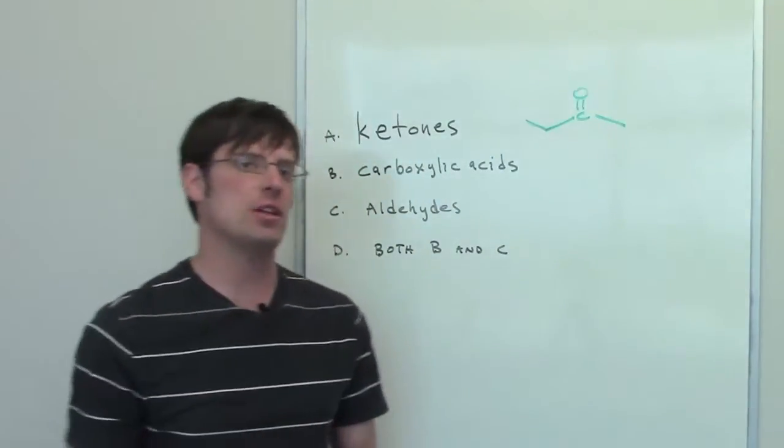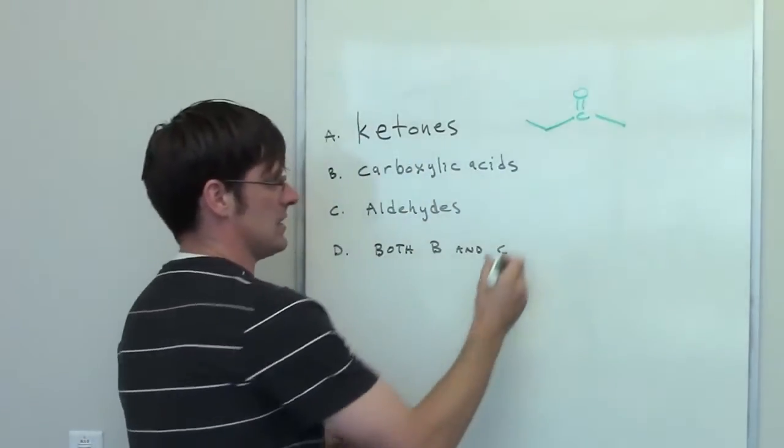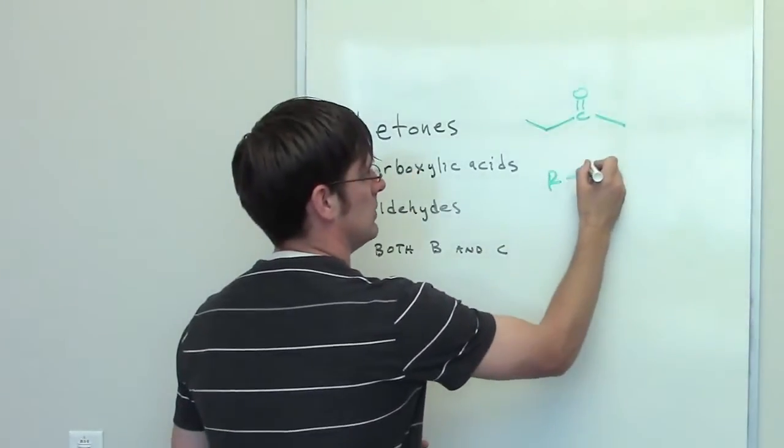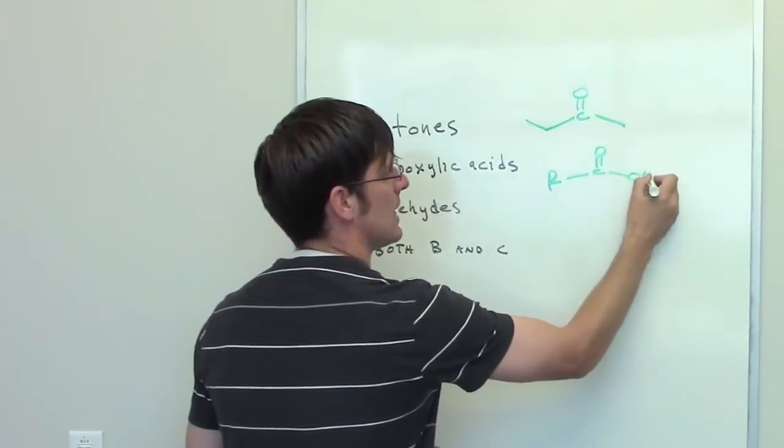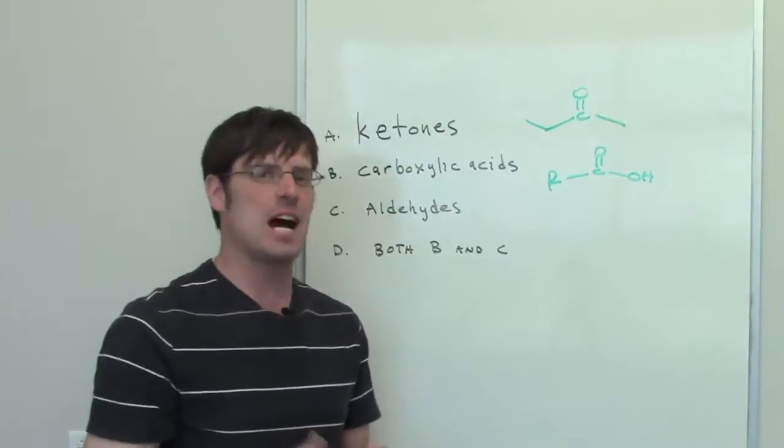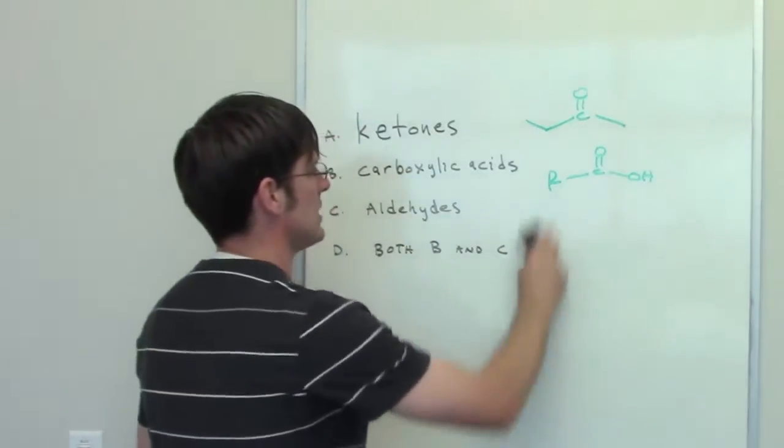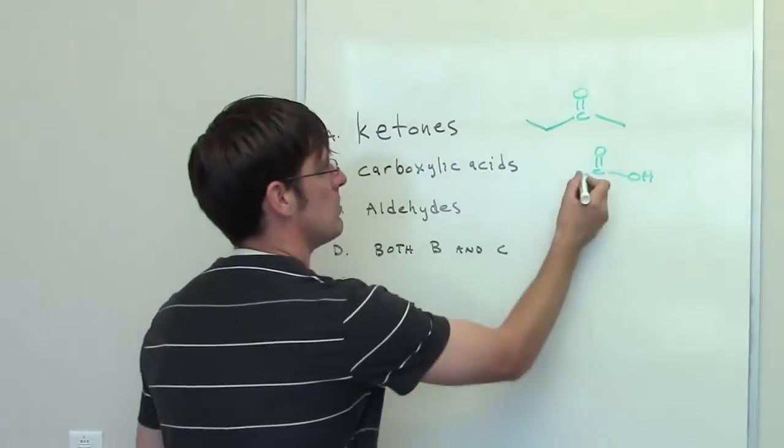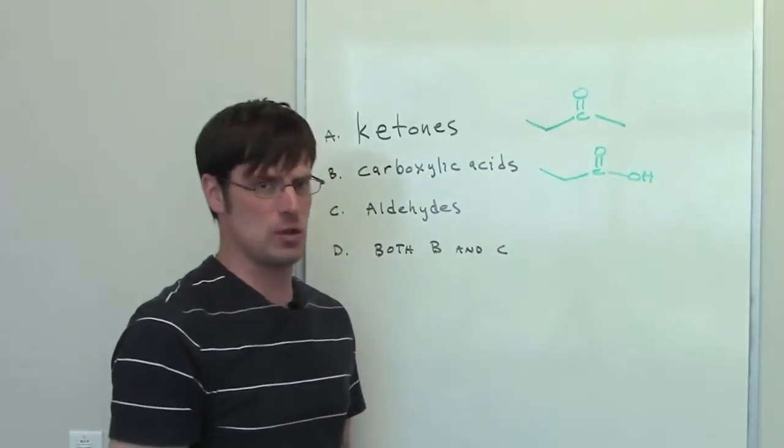This would be methyl ethyl ketone. Carboxylic acids have the generic structure that looks like this, where once again, the R represents any hydrocarbon chain. An example of carboxylic acid would be propanoic acid, which has this structure.